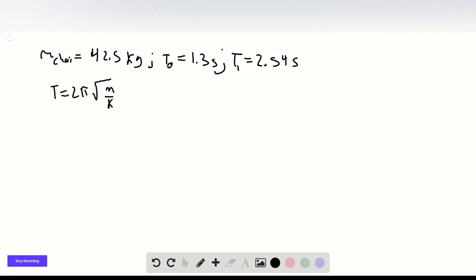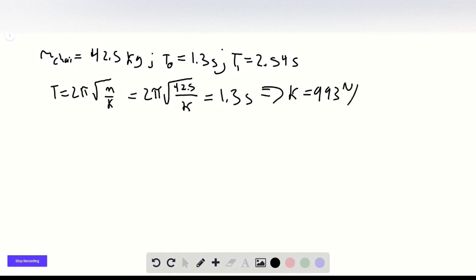When the chair is empty, we have 2π times the square root of 42.5 kg over k, and this equals 1.3 seconds. This gives us a spring constant k of 993 newtons per meter.